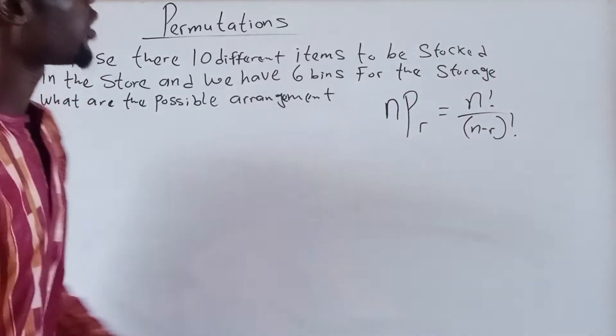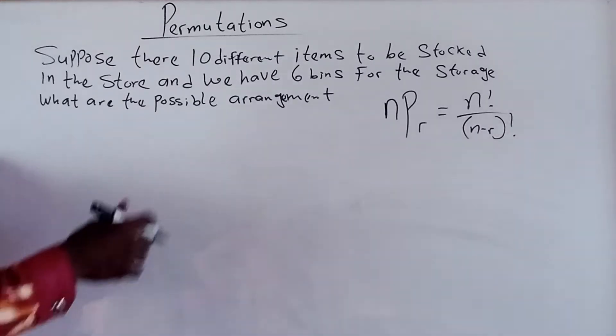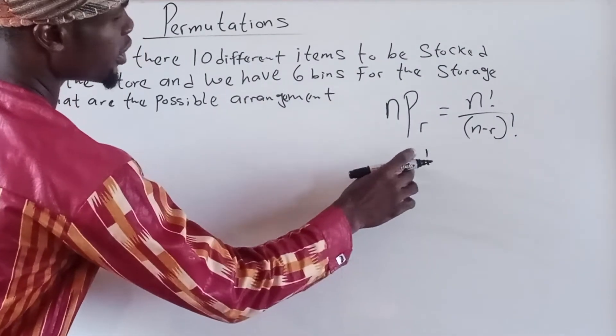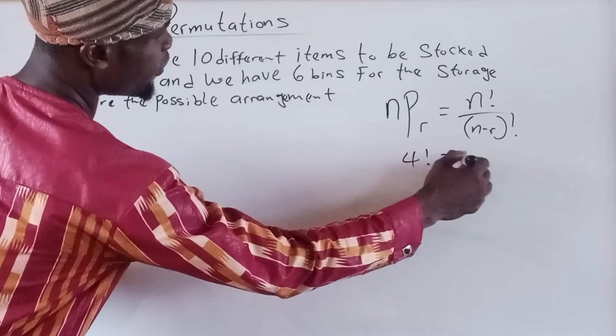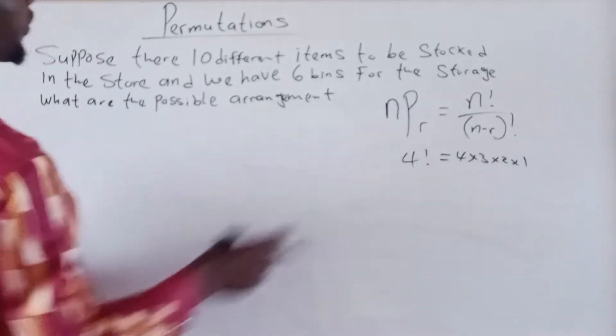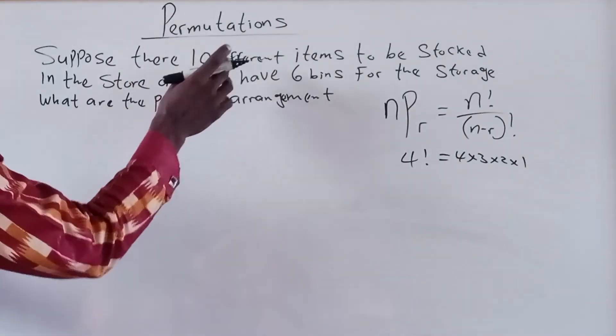We have 4. So to find the 4 factorial, this means 4 multiply by 3 multiply by 2 multiply by 1. So that is how to find out factorial. So the N here,